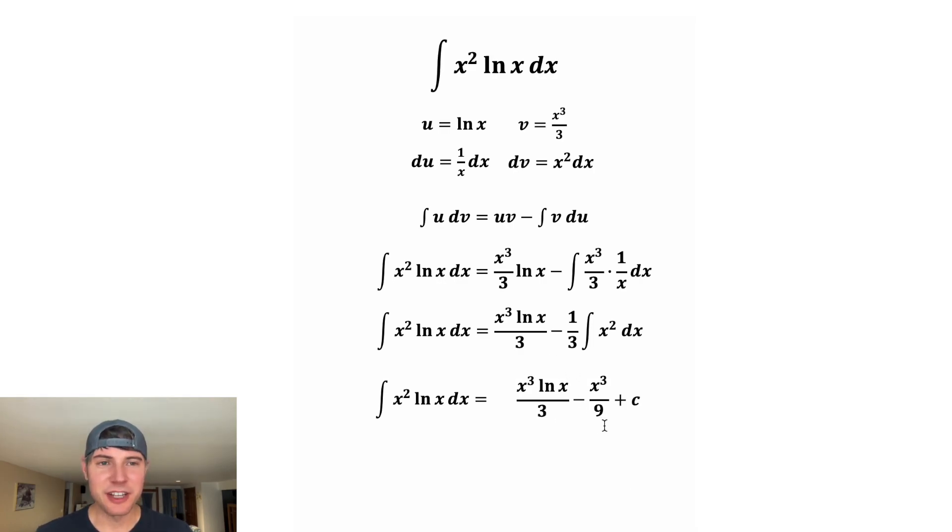We can give this the same denominator as this. So we'll multiply top and bottom by 3. This 3 times 3 will give us 9, and this 3 can be brought over.